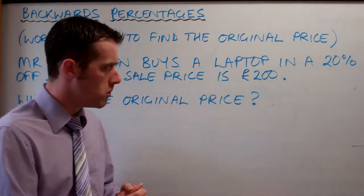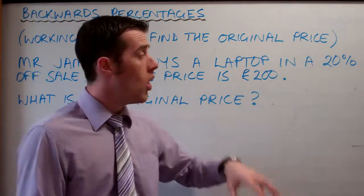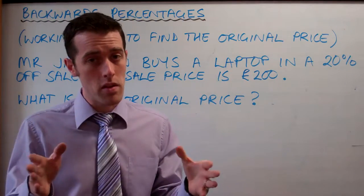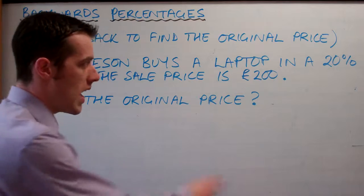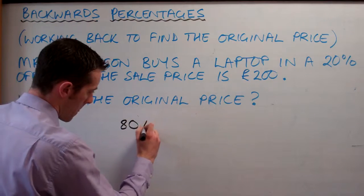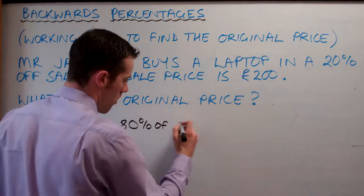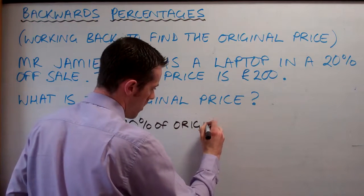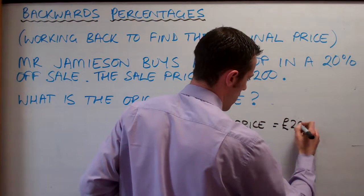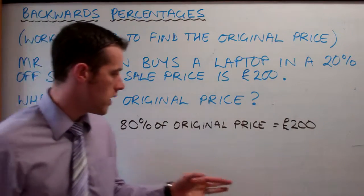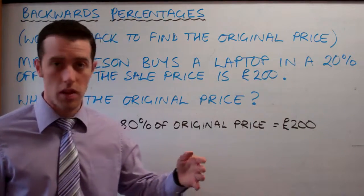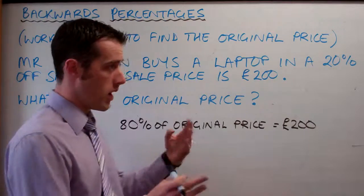We have to think first of all: how much as a percentage of the original price is £200? Because if we take the original price and take off 20%, then we're left with 80%. And that's the £200. That makes sense — if we start at 100% and take 20% off, we're left with 80%, and that's £200.